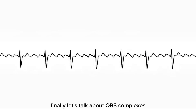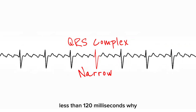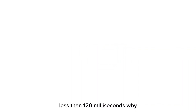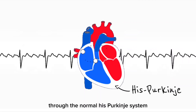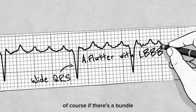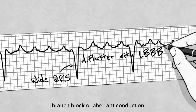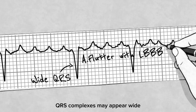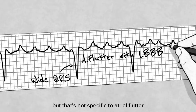In most cases, QRS complexes are narrow — less than 120 milliseconds — because ventricular conduction is still occurring through the normal His-Purkinje system. Of course, if there's a bundle branch block or aberrant conduction, QRS complexes may appear wide, but that's not specific to atrial flutter.